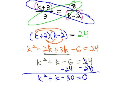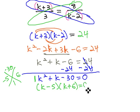Now, we can factor this expression. Using the ac method, we're multiplying to negative 30 and adding to 1. This would be 5 and 6 if the 5 is negative. Because we have a 1 in front of the k squared, we can factor it to k minus 5 and k plus 6 equals 0.